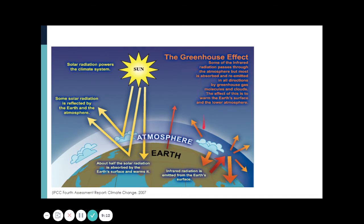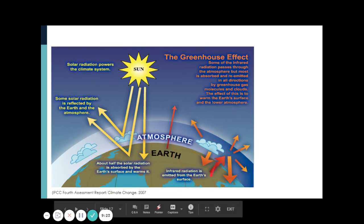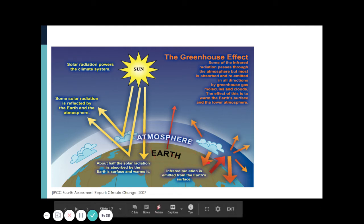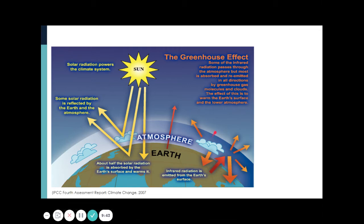Greenhouse gases such as carbon dioxide, methane, and CFCs can trap or absorb the heat coming from the surface of the Earth. Note that this surface heat is actually a result of energy coming from the sun. These gases trap the heat and bounce it back to the surface, thus increasing thermal radiation near the surface of the Earth.